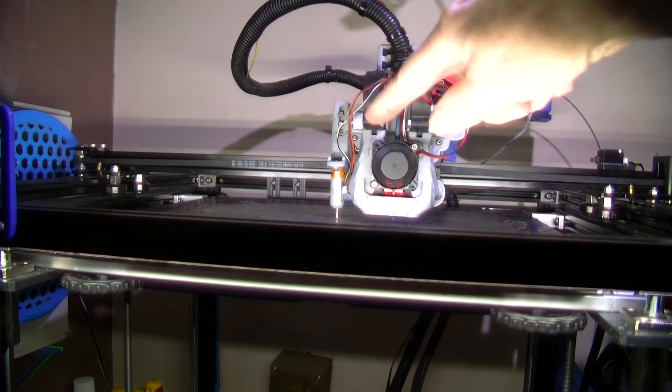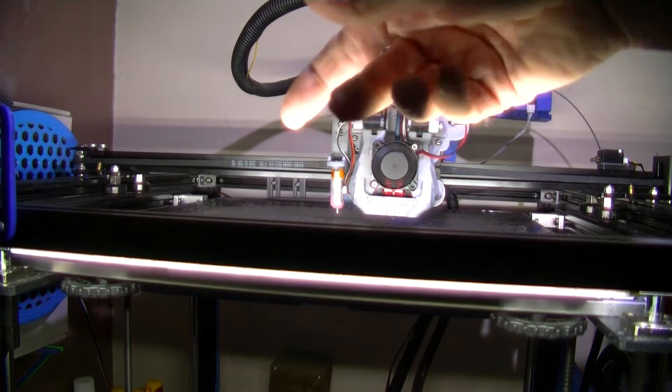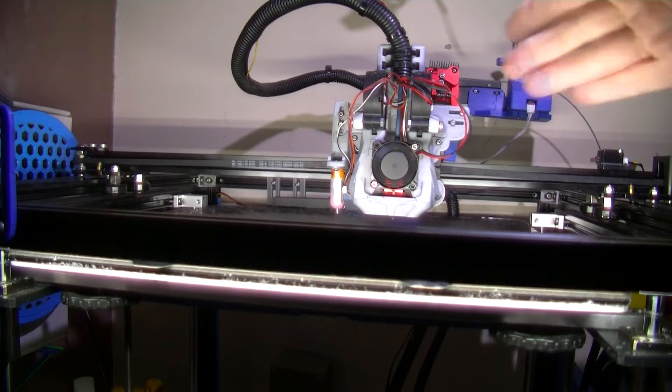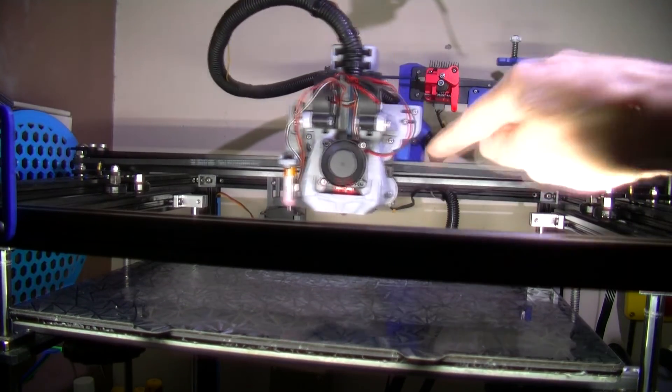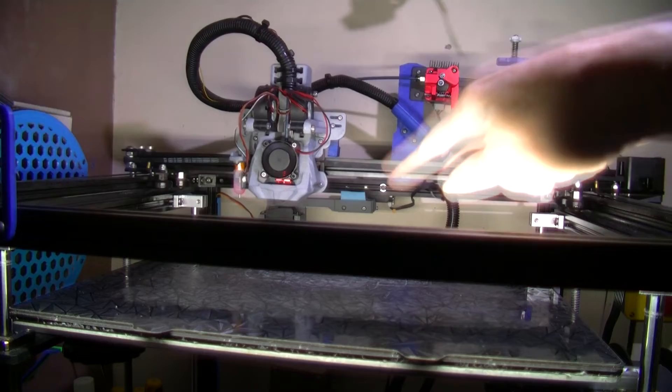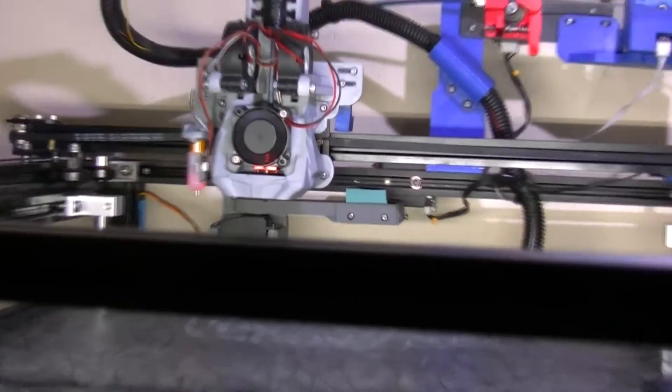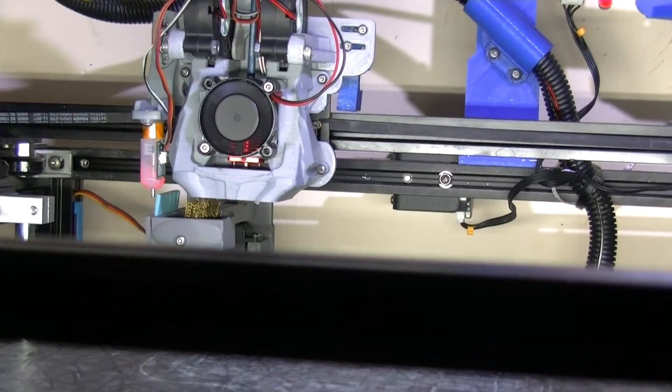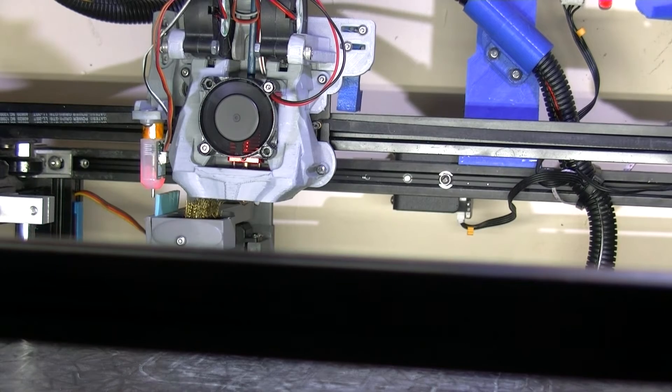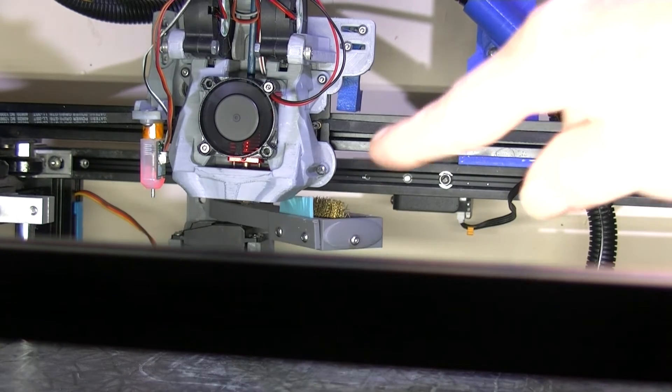It does like a triple check on that servo arm, asset and move back. Then the head moves to position where it can wipe the nozzle. Like so. And you can see the wire brush there.